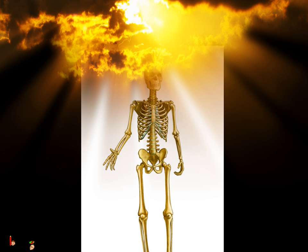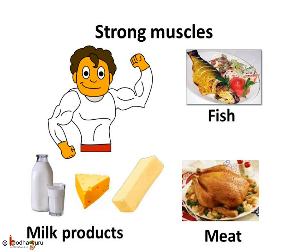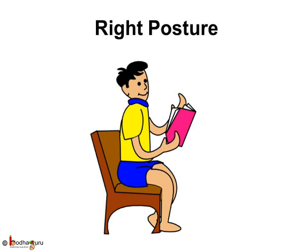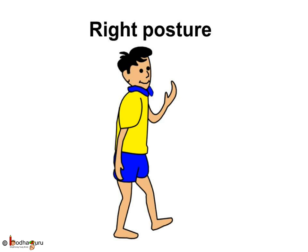Sun rays in the morning and evening are good for bones. The muscles are made up of proteins, so take a diet which has milk products, fish, and meat. This diet makes muscles strong and healthy. Regularly exercise. Good posture while we sit, stand, or walk is important. Also, we should take proper rest.